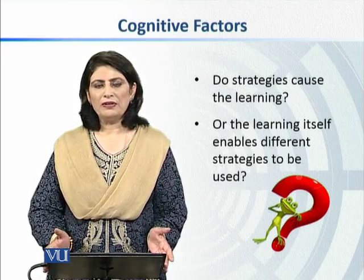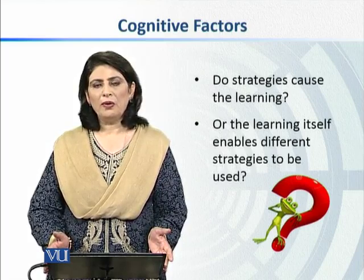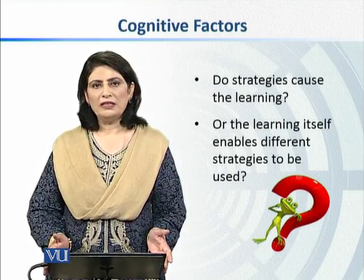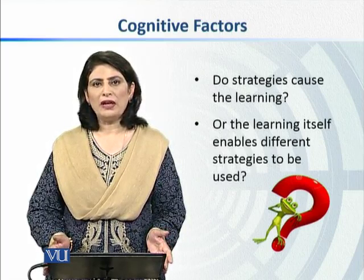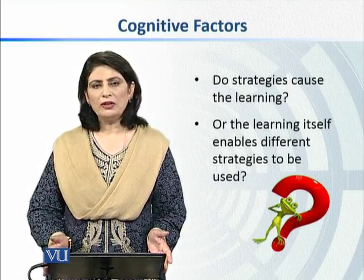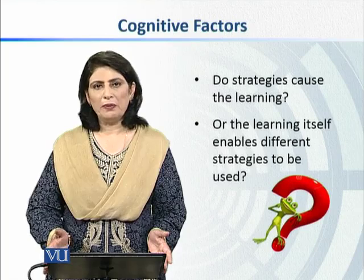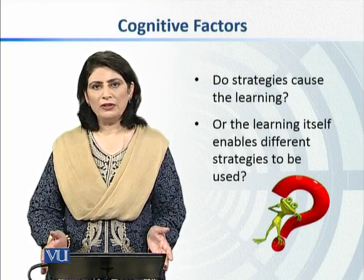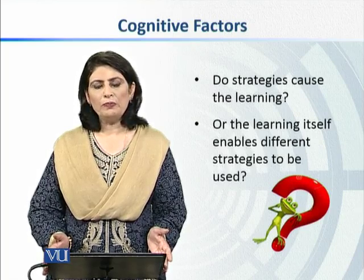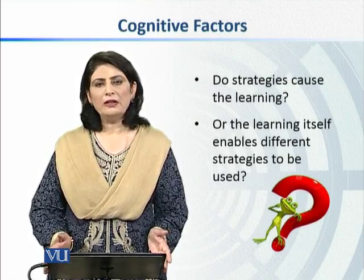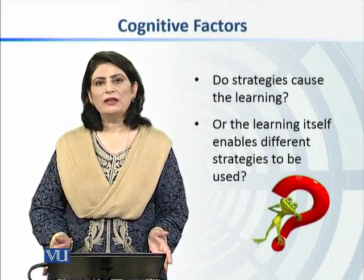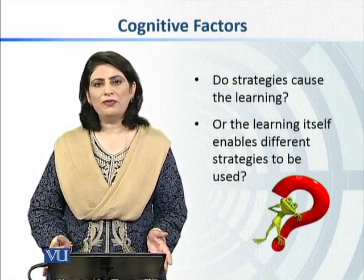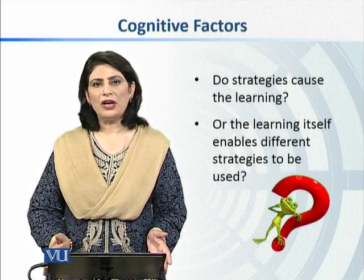So we have talked about the cognitive differences across learners. Number one was intelligence. Number two was aptitude — that is, the propensity to learn a language, for which a test has been developed. And the third was the difference in strategies.